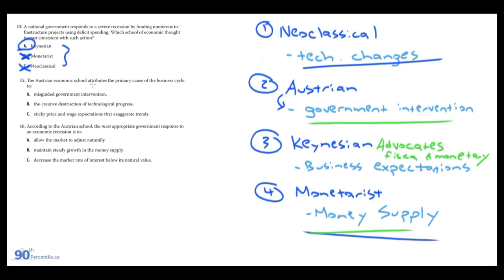The Austrian economic school attributes the primary cause of the business cycle to misguided government intervention. And the last question: according to the Austrian school, the most appropriate government response to an economic recession is — maintain steady growth in the money supply? No, that's monetarist. Decrease the market rate of interest below its natural value? No, that's monetary policy again. Really what the Austrian school is telling them to do is not do anything — just let the market adjust naturally.